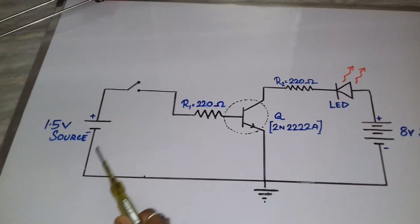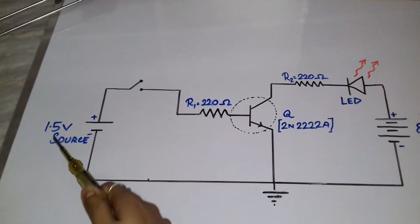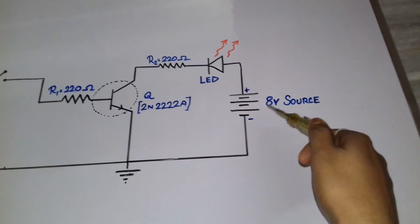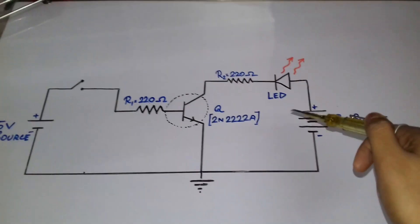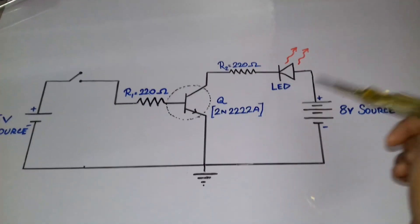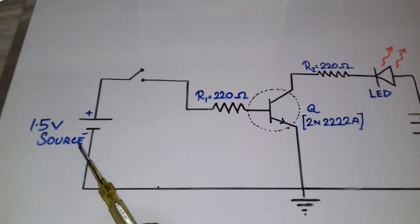And an LED cannot glow only on a 1.5 or 1.2 volt source. So we will need an 8 to 9 volt source or 5 volt source. But if we want to control this LED by this 1.5 volt source...